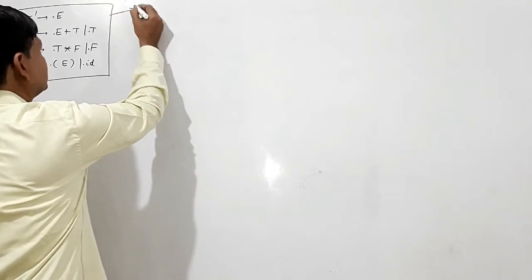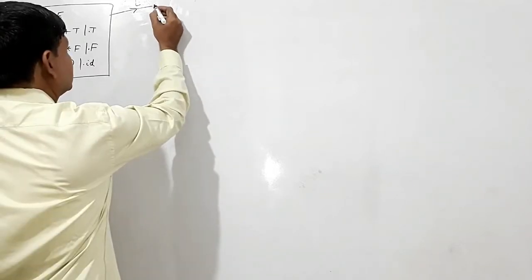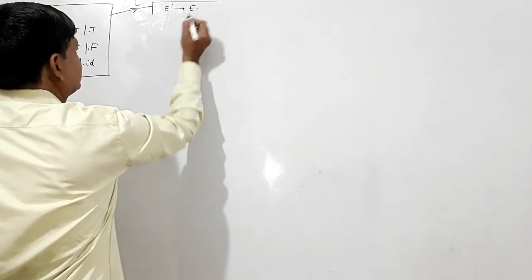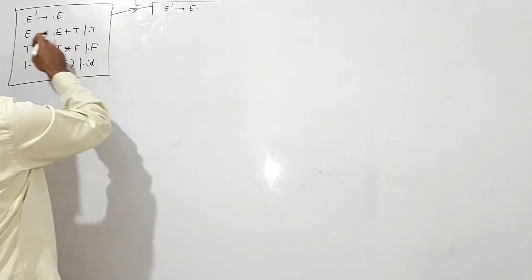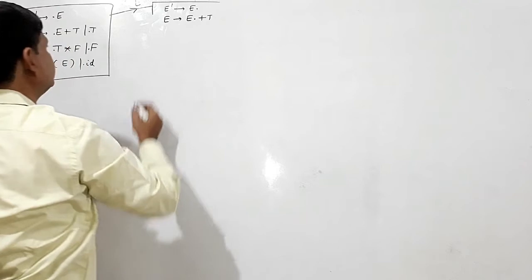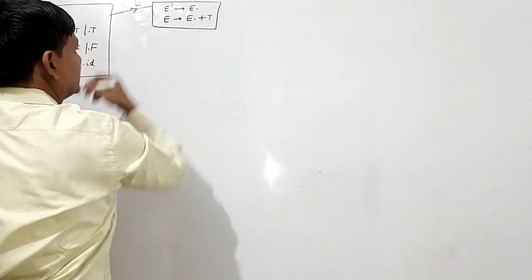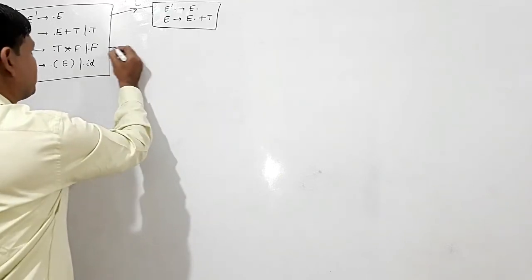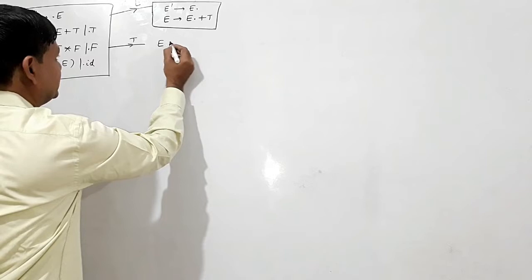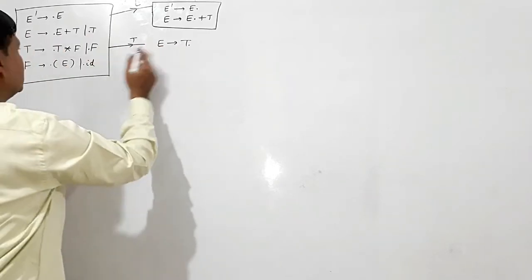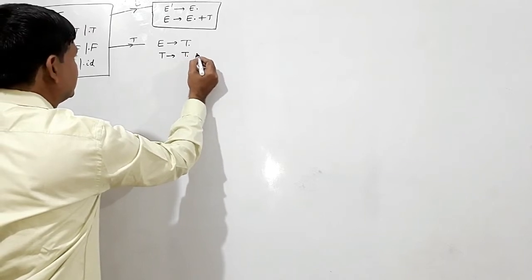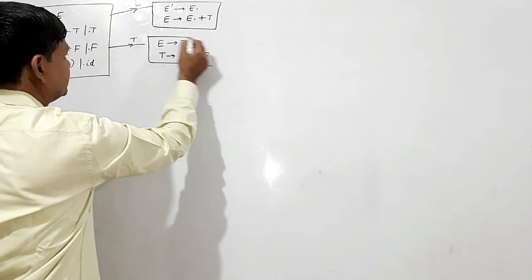If I read E in this state, E-dash will give me E dot, and E will give me E dot plus T. This is one state. Now if I read T, E will give me T dot, and T is giving me T dot star F. This is another state.